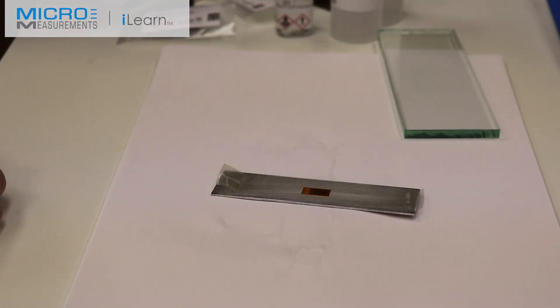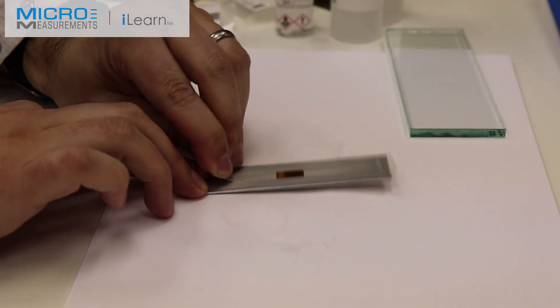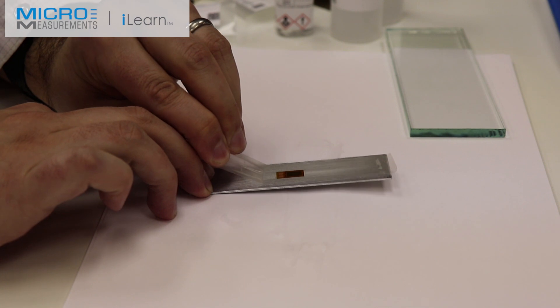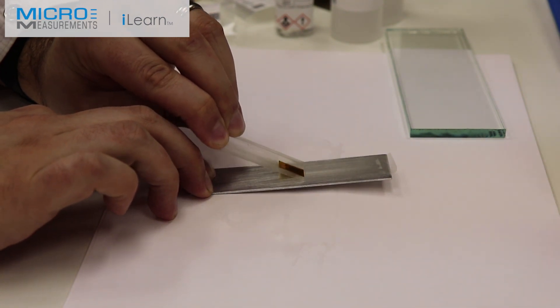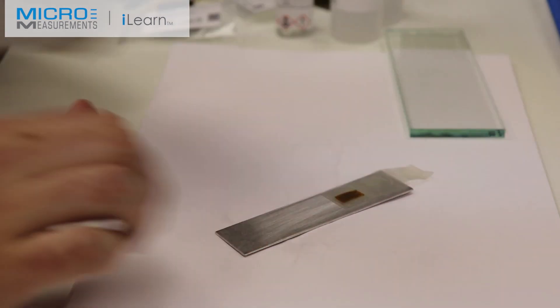Now the next step will be to expose the bonding surface of the gauge and put the Catalyst-C on the back of the gauge. Lifting at a shallow angle, we don't want to damage the gauge by bending it too tight a radius. He'll pull it back on itself.